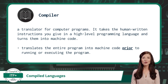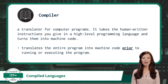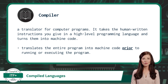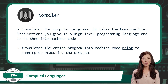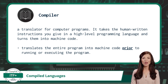A compiler is a translator for computer programs. It takes the human-written instructions you give in a high-level programming language and turns them into machine code. It is important to note that a compiler translates the entire program into machine code prior to running or executing the program.